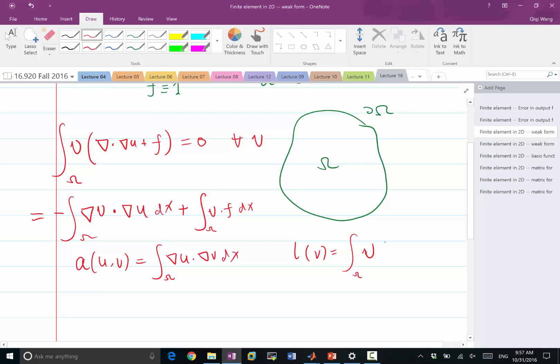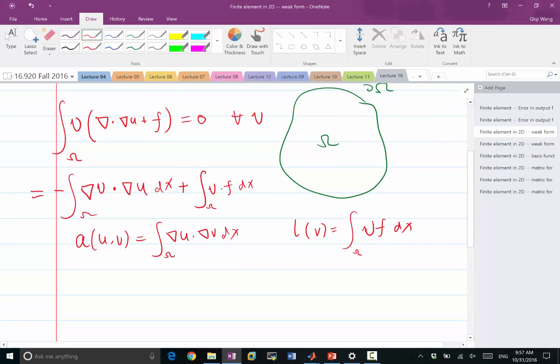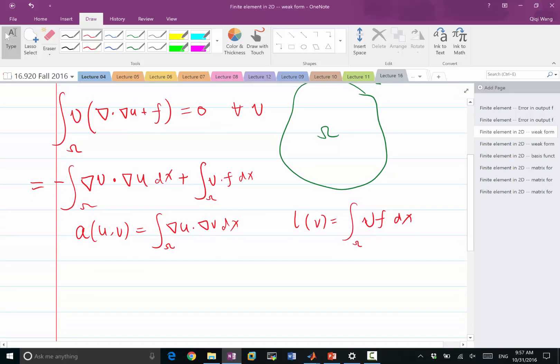So v times f dx. All right. So what space are we in here? In what space would you need to define u and v for the bilinear form and the linear functional to be well defined? What functional space does u and v have to be in? H1 again, exactly. So u and v also has to be in H1 because their respective derivatives has to be square integrable.